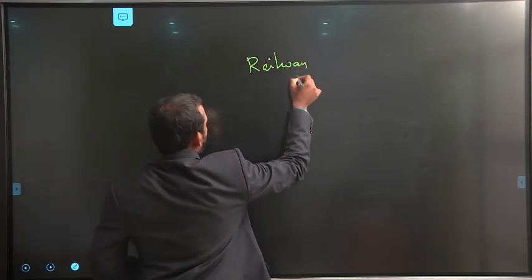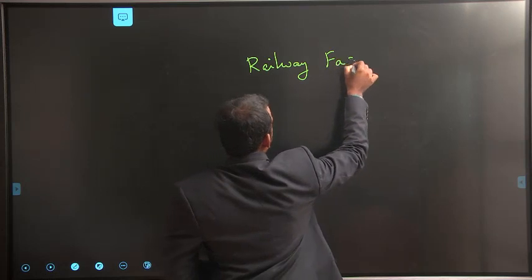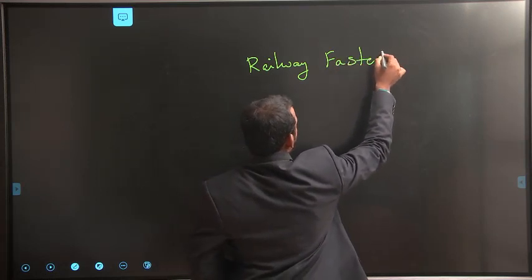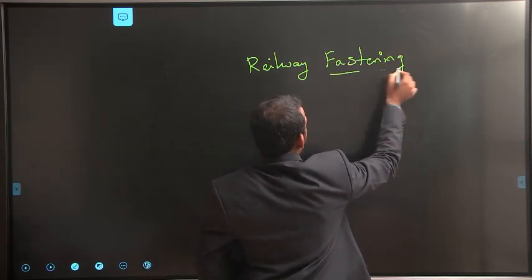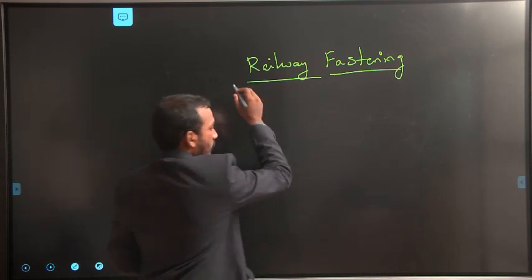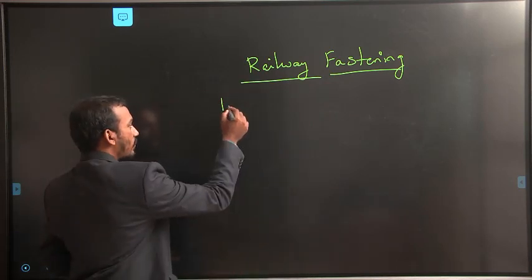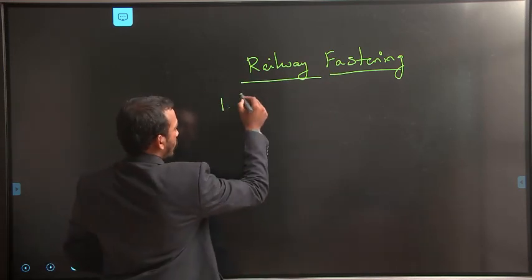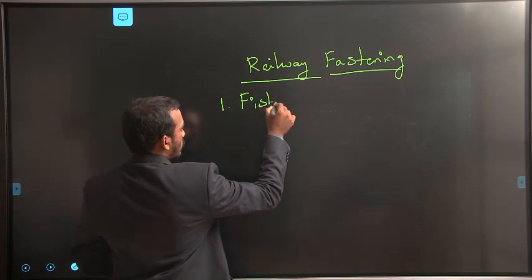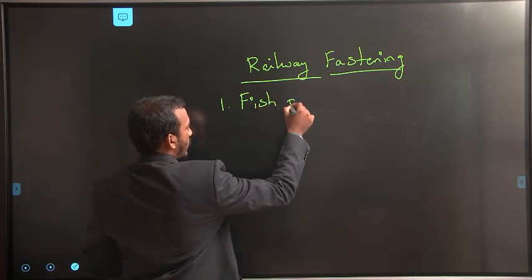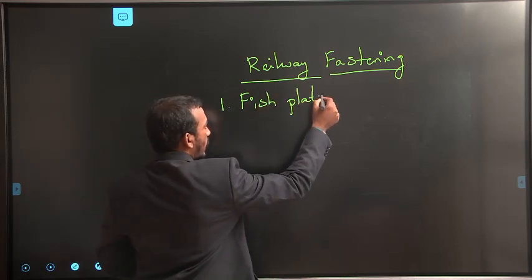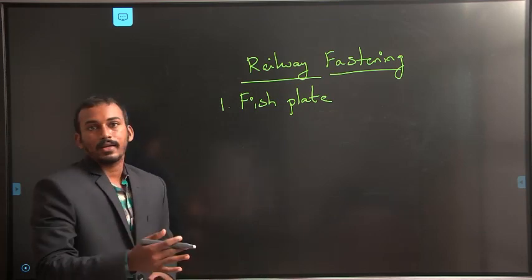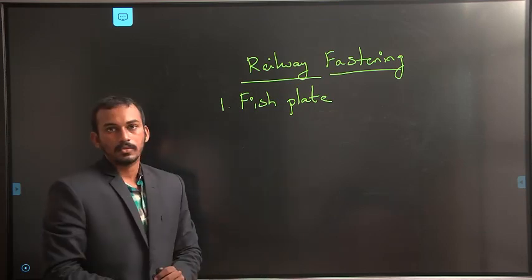What are these railway fastenings? These are nothing but fixtures which are used to connect various components of a railway track. The first railway fastening is fish plate. What is this fish plate? This plate is used to connect two longitudinal rails at the rail joints.